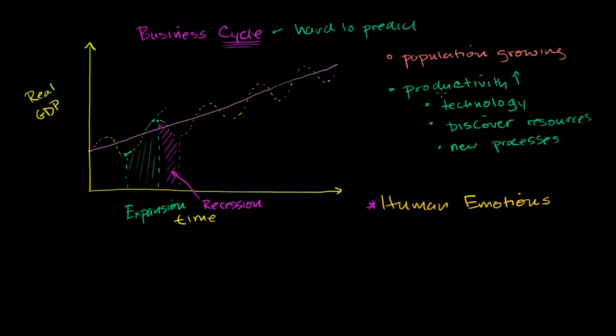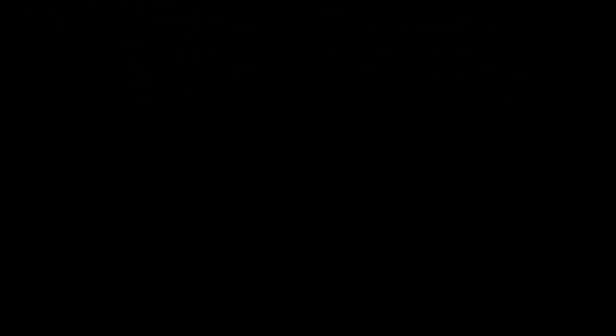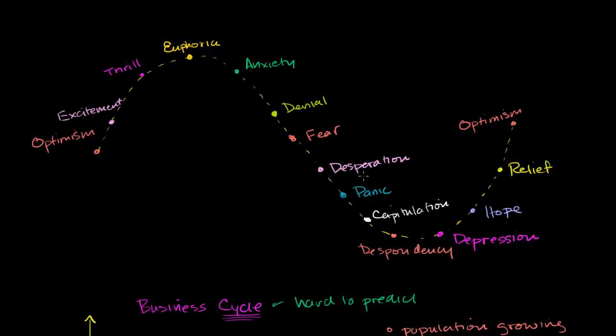And to kind of understand this emotional aspect of it, this is something I redrew, a graph that always gets chain mailed around or sent around usually during every bubble when people start becoming skeptical of the growth in economy. And it traditionally refers to stock market cycles. But stock market cycles are closely linked to actual economic cycles. And I think these words really do capture the emotional sentiment of what's going on during the business cycle or during a stock market cycle. Is that right? When we're in the middle of an expansion, people are feeling pretty optimistic. A little bit further into it, people are feeling excitement. They're saying, hey, maybe this is kind of a new type of thing.